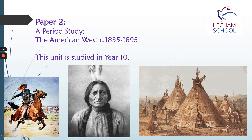Paper 2 includes two units, both of which are studied in Year 10. The first one is a period study — we look at the American West in the 19th century. And unlike the movies would have you believe, it's not just cowboys and Indians. In fact, it's about the systematic genocide of the First Nation peoples of America.